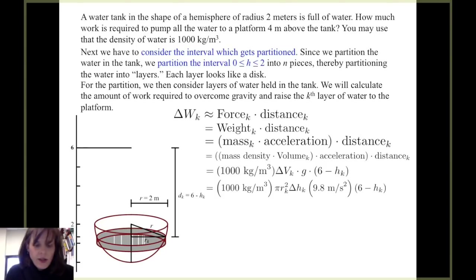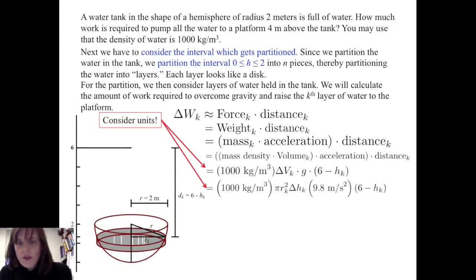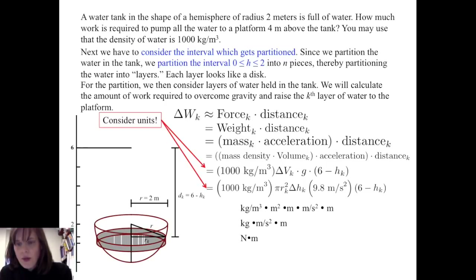The volume of water is simply the volume of that cylindrical disk, which is pi r squared times delta h sub k. Acceleration due to gravity is 9.8 meters per second squared and distance is measured in meters. When we consider the units involved and multiply them out, we get kilograms times meters per second squared times meters, which is simply a newton-meter or a joule. So the units work out to be a unit of work, which is what we want.